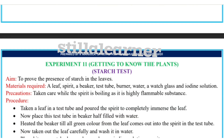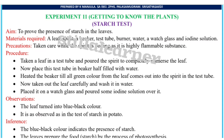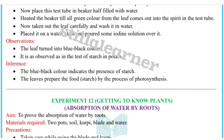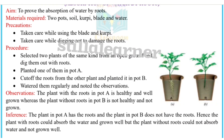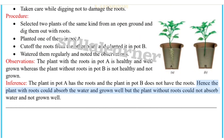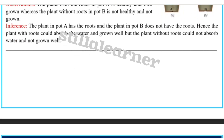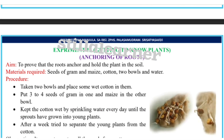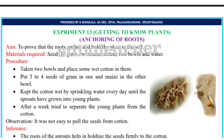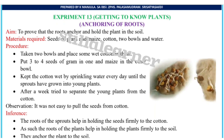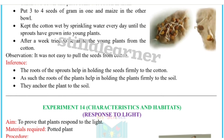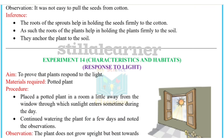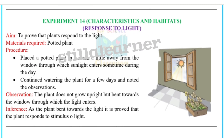Experiment 11 is getting to know plants — starch test. Experiment 12 is getting to know plants — absorption of water by roots. Experiment 13 is getting to know plants — occurrence of fruits.